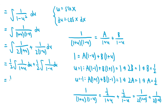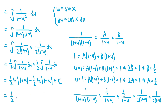Evaluating those integrals, the expression becomes 1 half ln of the absolute value of 1 plus u minus 1 half times ln of the absolute value of 1 minus u plus some constant c. The second term is negative because when we integrate 1 over 1 minus u, the negative sign before the u means we multiply the result by negative 1. Substituting sin of x back in for u, this becomes 1 half ln |1 plus sin x| minus 1 half ln |1 minus sin x| plus c.